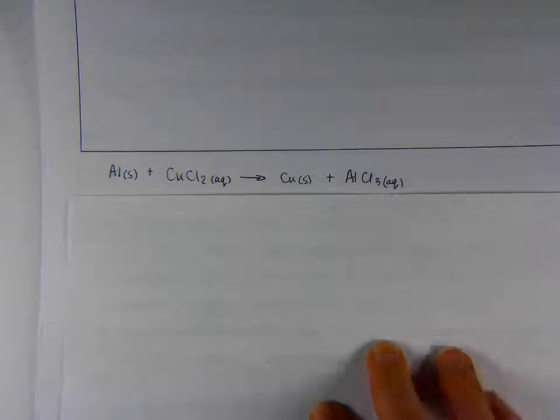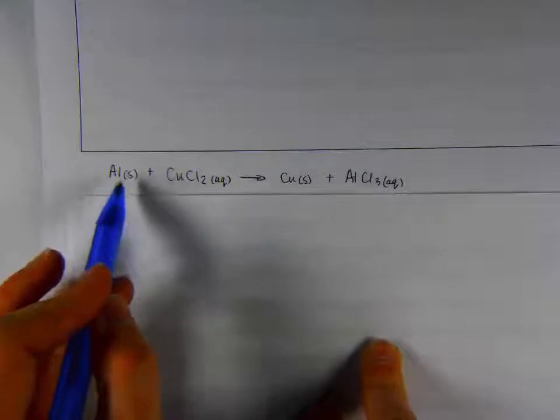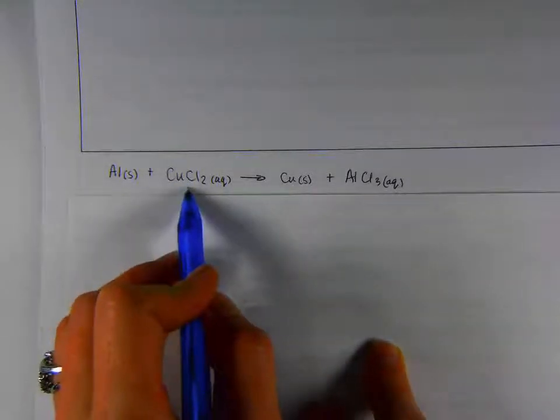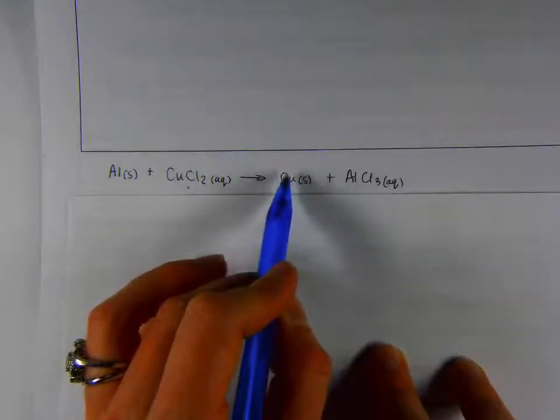Hi AP Chemistry students, it's Ms. Johnson and we're picking up at the end of the chapter four notes with redox reactions. I want to start by looking at this reaction that we saw qualitatively happen in class today. We had solid aluminum or tinfoil and we mixed in the copper chloride, that blue solution, and what we saw was the solid copper forming.